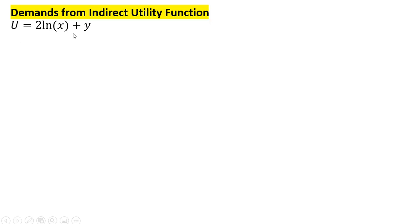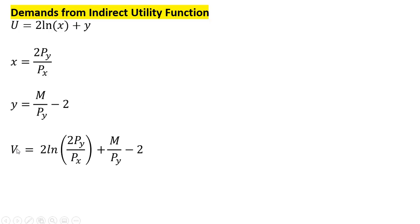Now we're going to derive the demands from the indirect utility function. Once again, here is our utility function. We found the demand for good x and the demand for good y. To get the indirect utility function, we plug these demands into our utility function — calling it v. Where we have x, we plug in the demand for good x, and where we have y, we plug in the demand for good y.